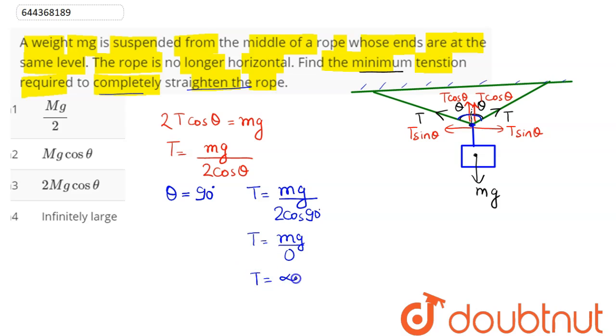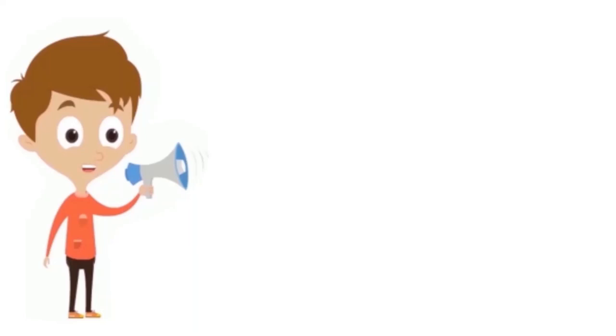Anything divided by zero is infinite. Hence, infinitely large tension will be required to completely straighten the rope. Therefore, option number four is the correct answer.